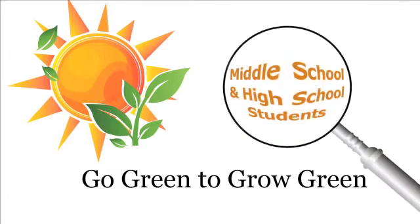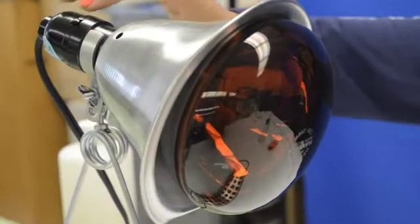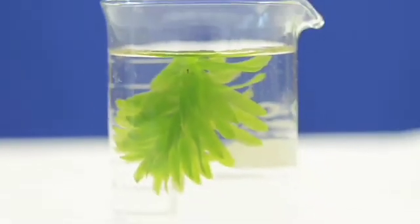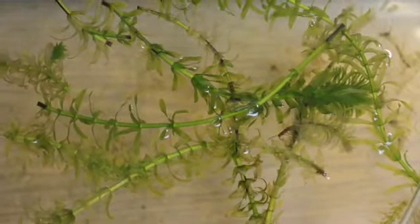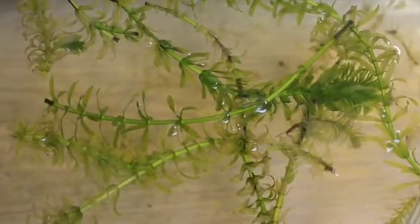This investigation is for middle school and high school students studying energy and dynamics of ecosystems. We will observe how variation in temperature can affect the photosynthetic rate of plants by performing a simple experiment with an aquatic plant called the Anacharis.